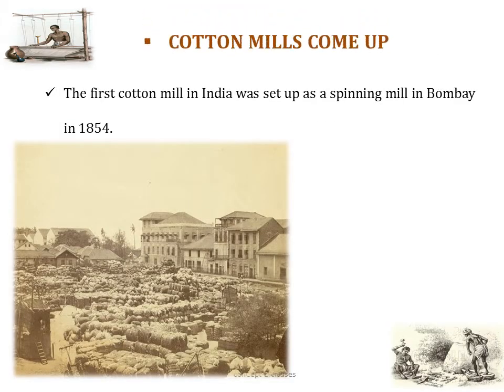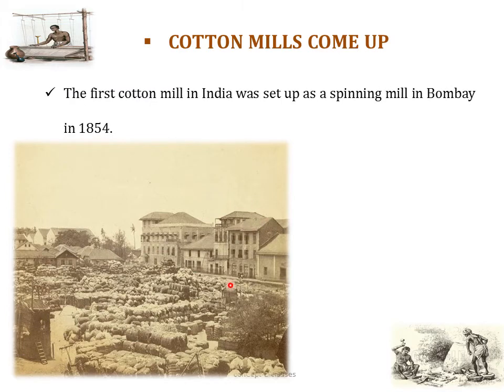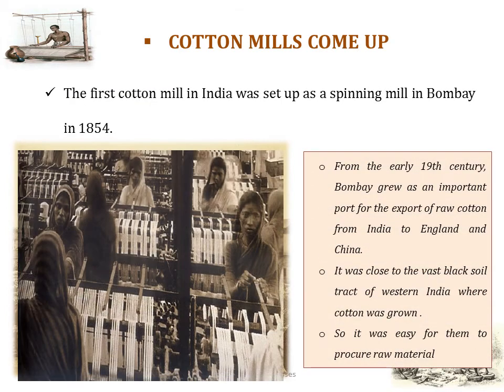The first cotton mill in India was set up as a spinning mill in Bombay in 1854. From the early 19th century, Bombay grew as an important port for the export of raw cotton from India to England and China, and it was close to the vast black soil tract of western India where cotton was grown, making it easy to obtain raw material.